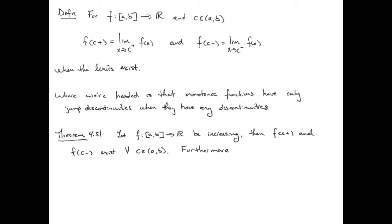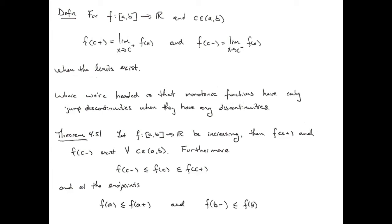Furthermore, F of C-minus is less than or equal to F of C, which is less than or equal to F of C-plus. At the endpoints, F of A is less than or equal to F of A-plus, and F of B-minus is less than or equal to F of B. Now let's go forward and prove this theorem.